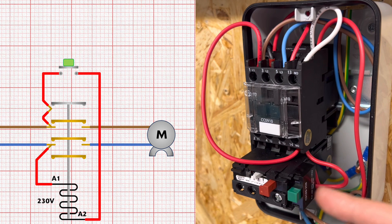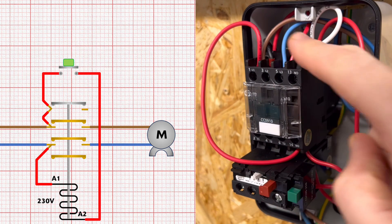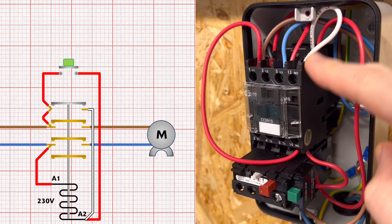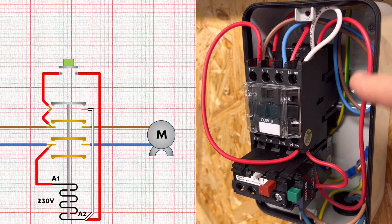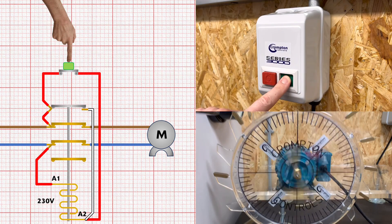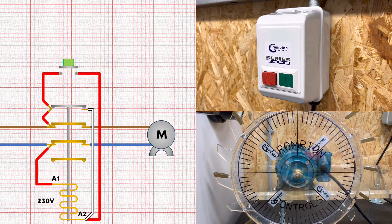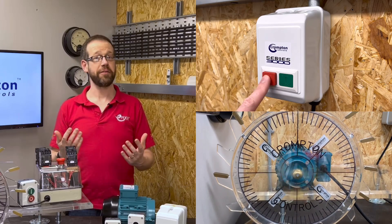We're going to use this auxiliary contact for a different purpose. If we wire through our start button as before, but also wire the control circuit through the auxiliary contact so that the auxiliary contact and the start button are wired in parallel with each other — now watch what happens when I press the start button. The motor starts as it did before, but when I take my finger off the start button the motor continues to run. That's because the coil is holding the auxiliary contact in, which means the coil is now connected to the supply even when the start button isn't pressed. Clever stuff!